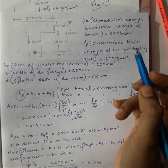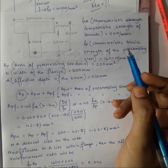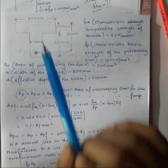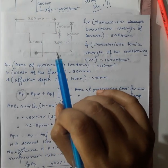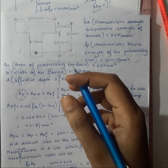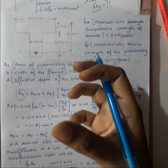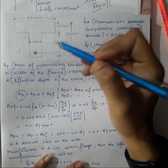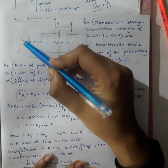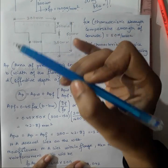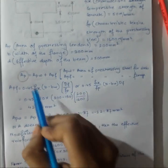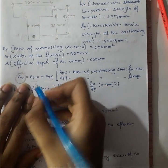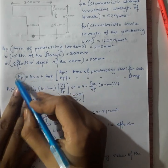Here we are solving an unsymmetrical section. We have already solved a symmetrical section — that was simpler to evaluate xu. But here we need to determine whether the neutral axis depth xu lies within the flange or outside the flange. To know that, we need to use a specific formula.